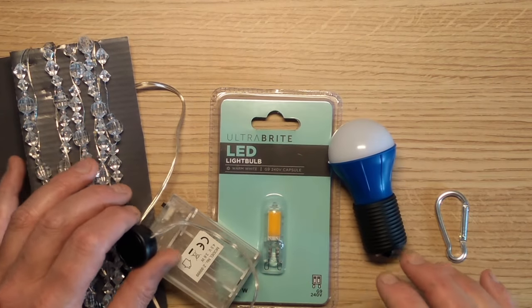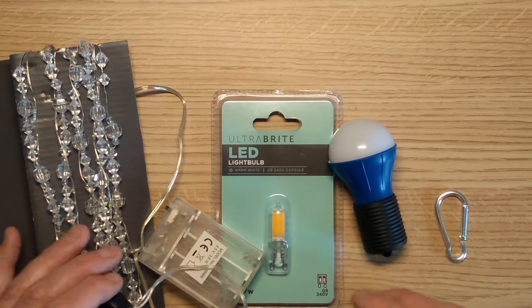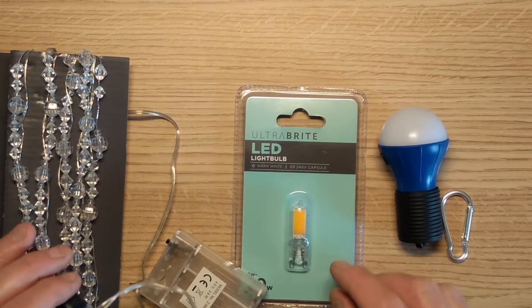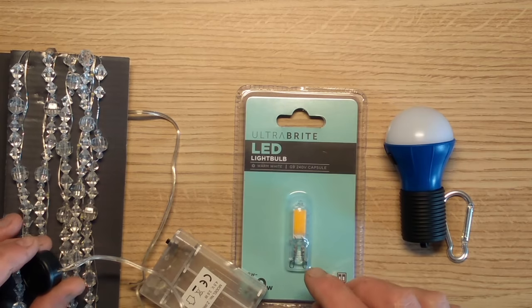With Pound World closing, they were selling off their stuff at the local shop and I bought a few items. I bought the COB based LED lamp that runs directly at 240 volts and I've already covered that in a video.